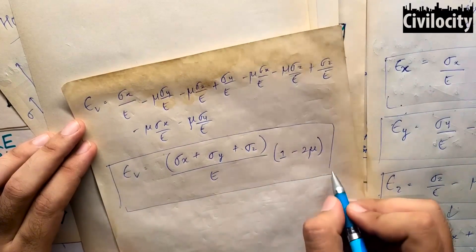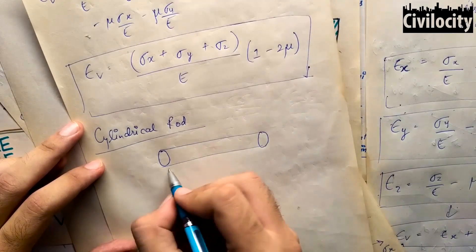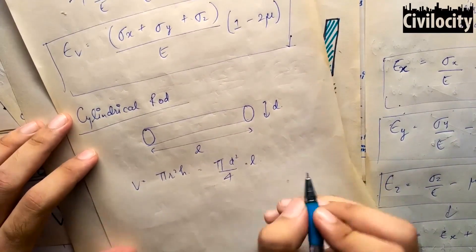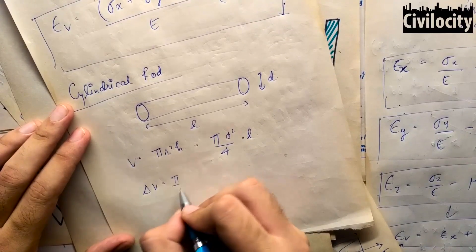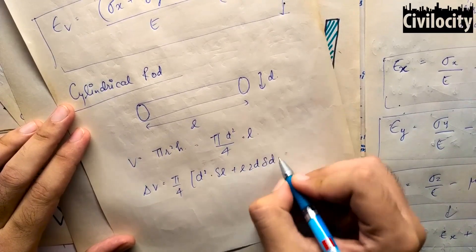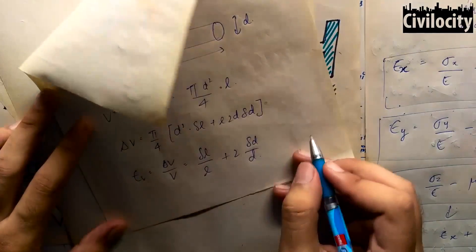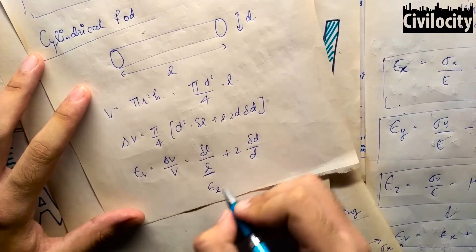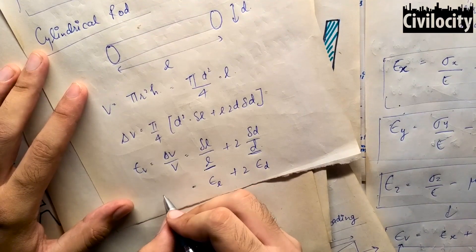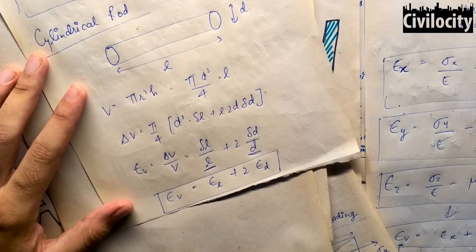Similarly, we can find volumetric strain for a cylindrical rod and a spherical body. For a cylindrical rod of length L and diameter D, the volume is pi/4 times D² times L. Differentiating and dividing by the original volume gives delta V/V equals delta L/L plus 2·delta D/D, where delta L/L is the strain along the length and delta D/D is the strain along the diameter. So volumetric strain equals the strain along the length plus twice the strain along the diameter.